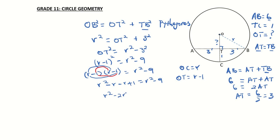So we have R squared minus 2R plus 1 equals R squared minus 9. We can start to transpose: R squared minus R squared and minus 2R.